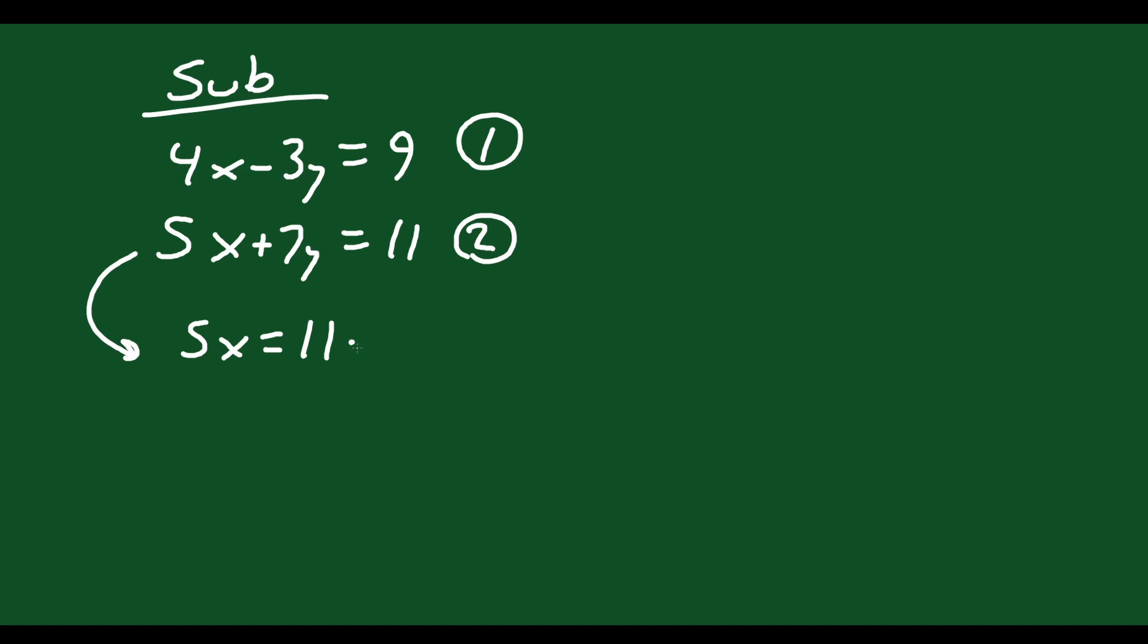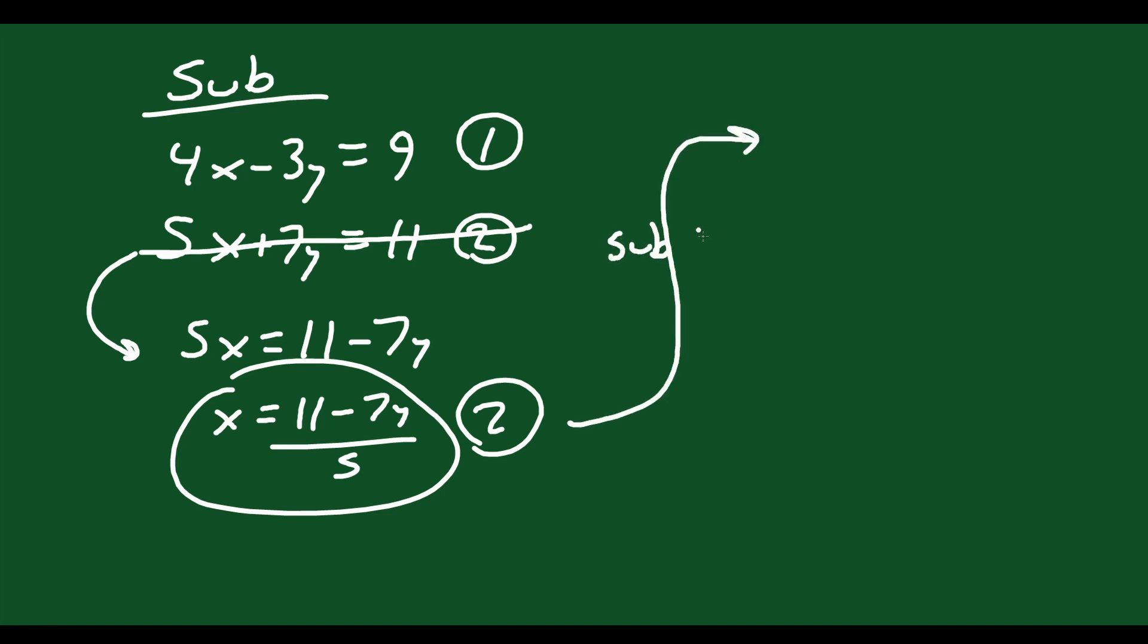5x equals 11 minus 7y. Divide both sides by 5. Therefore, x equals 11 minus 7y over 5. So I have this new equation 2. So I don't need this old one anymore. I have this new one. I can now substitute 2 into 1. So I'm going to sub 2 into 1. Substituting equation 2 into equation 1.